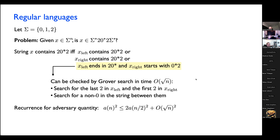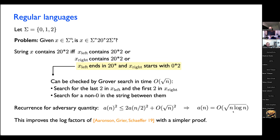This gives us a recurrence for the quantum adversary quantity for this problem: the square of the adversary quantity is at most twice the square of the adversary quantity for an instance of half the size — here's where we get basically a factor of √2 in the adversary quantity — plus a term that's big-O of (√N)², if we're adding things up in quadrature as these composition rules require. Solving this recurrence, what we find is that the adversary quantity for an instance of size N is big-O of √(N log N). This is basically the same result that appeared in the Aaronson, Grier, and Schaefer paper, but with an arguably simpler proof once you understand this quantum divide and conquer framework, and the log factors are slightly improved.